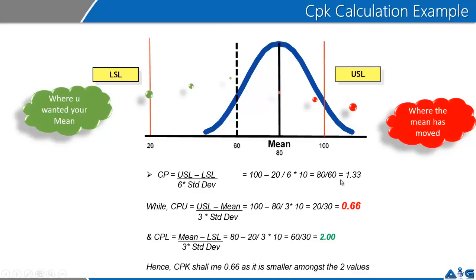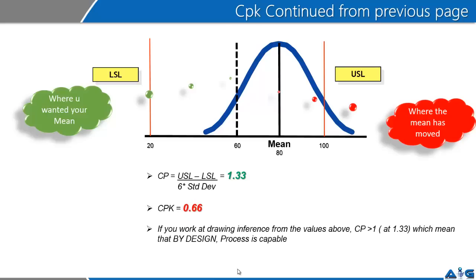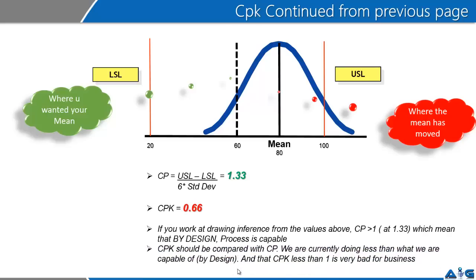In this business process, CP is 1.33 while CPK has gone down to 0.66. Drawing inference: CP greater than 1 means that by design the process is capable. However, our CPK shows we are doing way less than what we are capable of — we are capable of 1.33 but performing below 1, which is very bad for business.